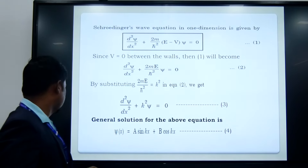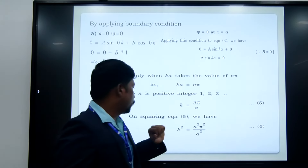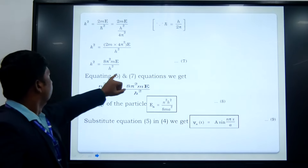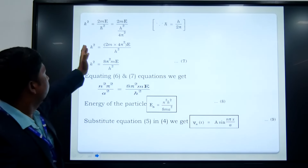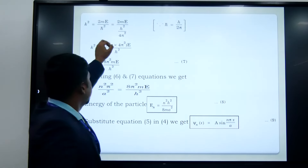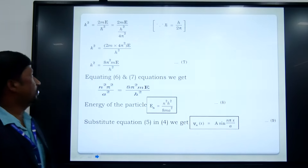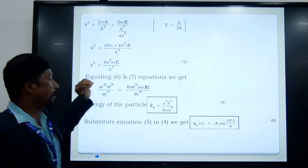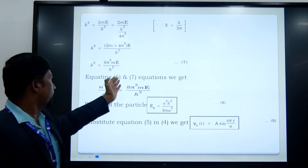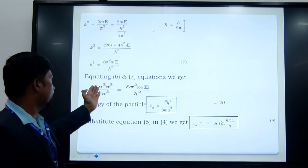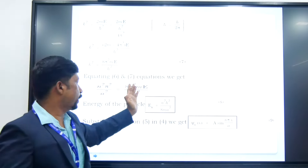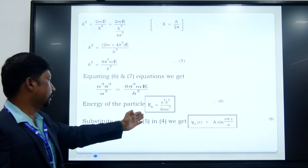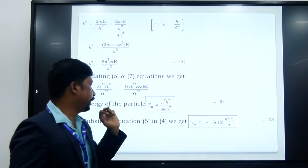We know that k² is equal to 2mE/ħ². Taking the square of k equals nπ/A, we get k² equal to n²π²/A². We also know that ħ equals h/2π, so ħ² equals h²/4π². By simplifying, we get k² equal to 8π²mE/h². Equating these two expressions, n²π²/A² equals 8π²mE/h², and solving for E, we get the eigenvalue En equal to n²h²/8mA².